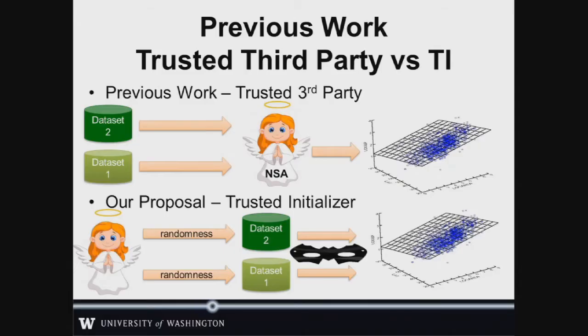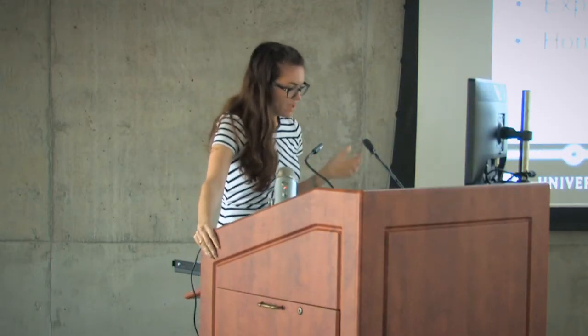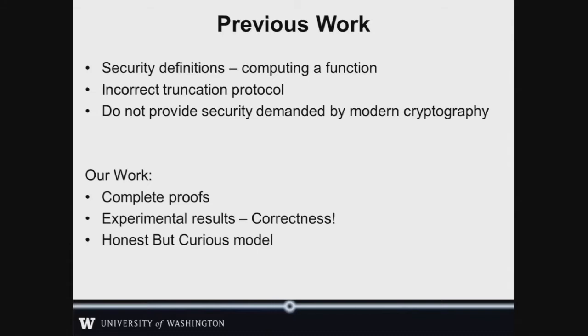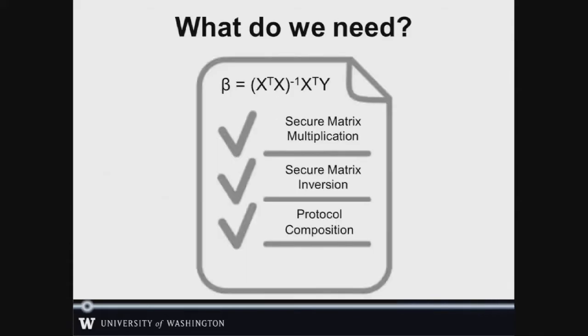So what work have others done to help Tommy? Some suggest using a trusted third party to hold all of the data and then provide back the protocols, but assuming such a third party even exists is a pretty strong assumption. Our work uses a trusted initializer who never has access to the data. Other work also has holes either cryptographically — with inaccurate or weak security definitions — or with correctness of the machine learning techniques. We provide complete proofs under an honest-but-curious model and we also do experimental results to make sure that we're getting accurate results.